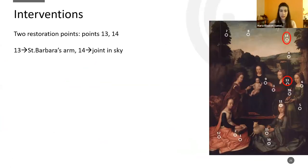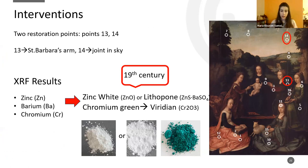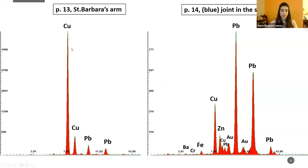We also took two points in the restoration areas, as identified from the ultraviolet imaging. The XRF showed the presence of zinc and two small peaks of barium and chromium, so we can assume it was zinc white or lithopone and chromium green viridian. All of these are pigments of the 19th century. The first restoration point gave no information, but the second point clearly shows the zinc, barium, and chromium peaks.